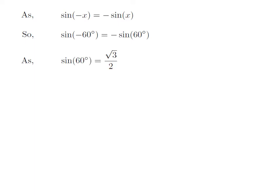We know the value of sine of 60 degrees is equal to square root of 3 upon 2. So, we get the value of sine of minus 60 degrees is equal to minus square root of 3 upon 2.